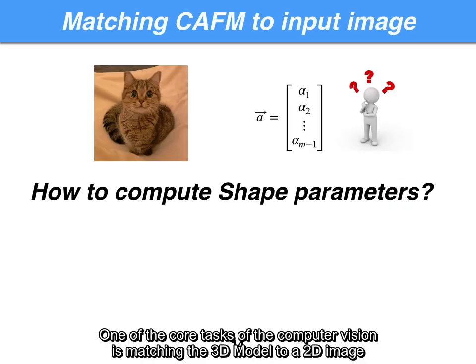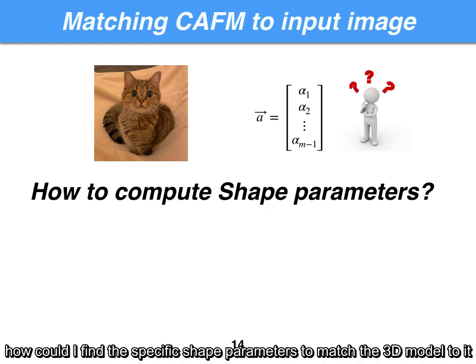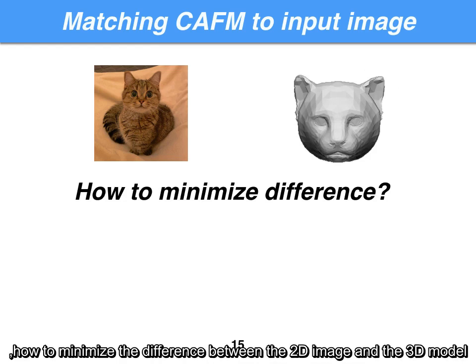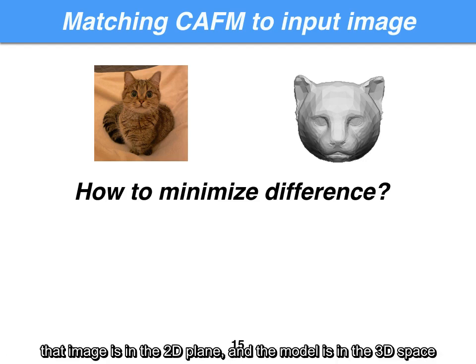One of the interesting tasks in computer vision is matching a 3D model to a 2D image. Given an input image, how could we find the specific shape parameters to match the 3D model to it? In other words, how do we minimize the difference between the 2D image and the 3D model? It should be noted that the image is in the 2D plane and the model is in 3D space.